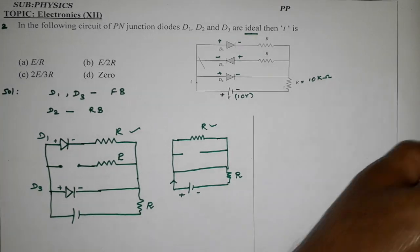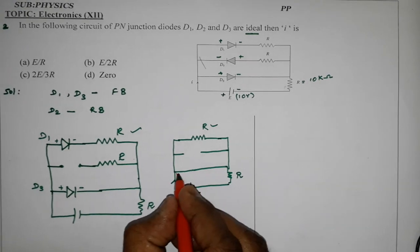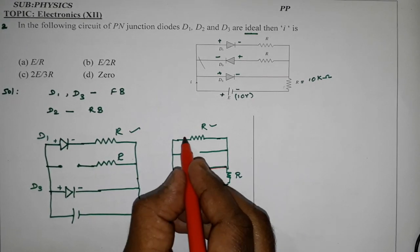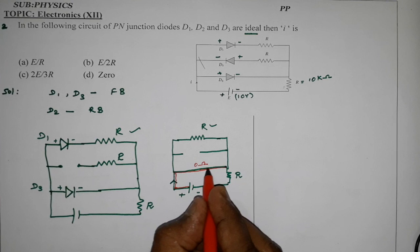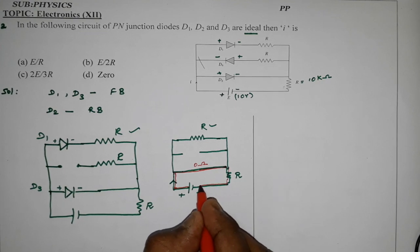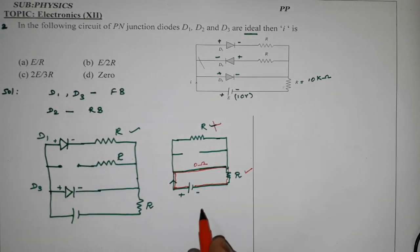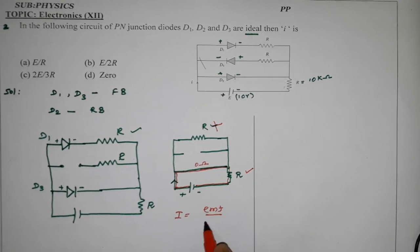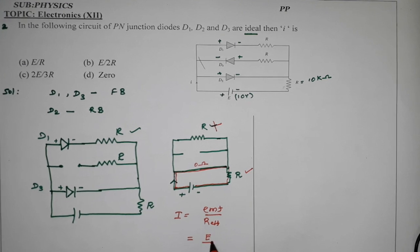The easiest path is to choose. Mark the direction of the current — this is the path. This is 0 ohm resistance, so the easiest path is chosen. The positive terminal connects to the negative terminal. If you mark a closed loop, this is the closed line with the resistance value. The current value i is equal to EMF divided by effective resistance R.